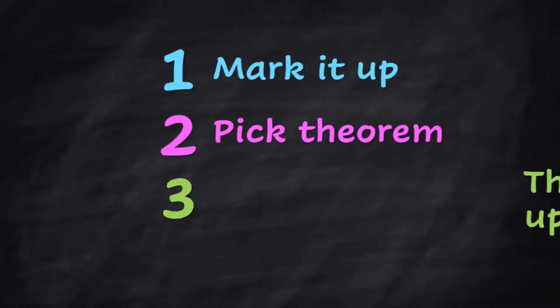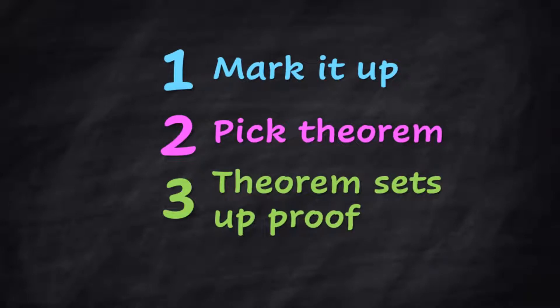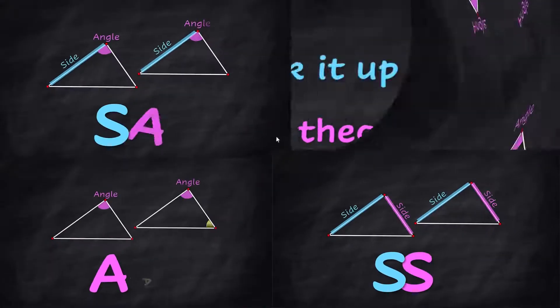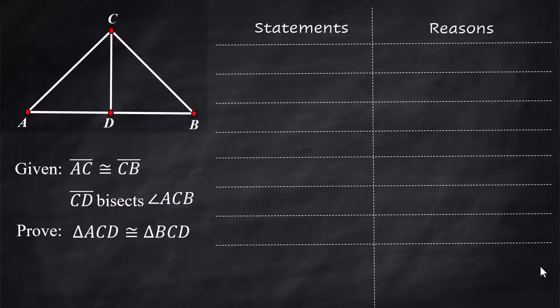Triangle proofs in three simple steps: mark it up, pick your theorem, and the theorem will help you set up your proof. Let's do proofs together right now step by step, and I'll review the theorems as we need them.